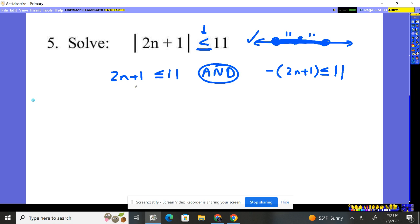So we need to solve these two things. Well, the left is equal. Let's subtract 1, subtract 1. Less than or equal to 10, divide by 2 on both sides, and you get n has got to stay smaller than 5. It's got to be less than or equal to 5.